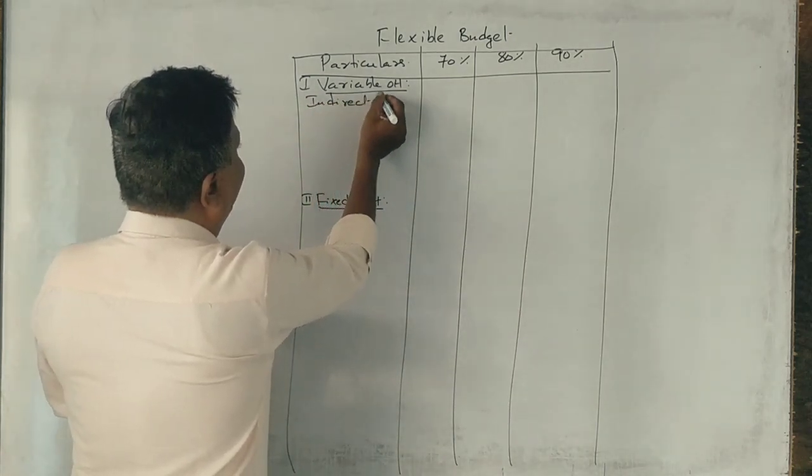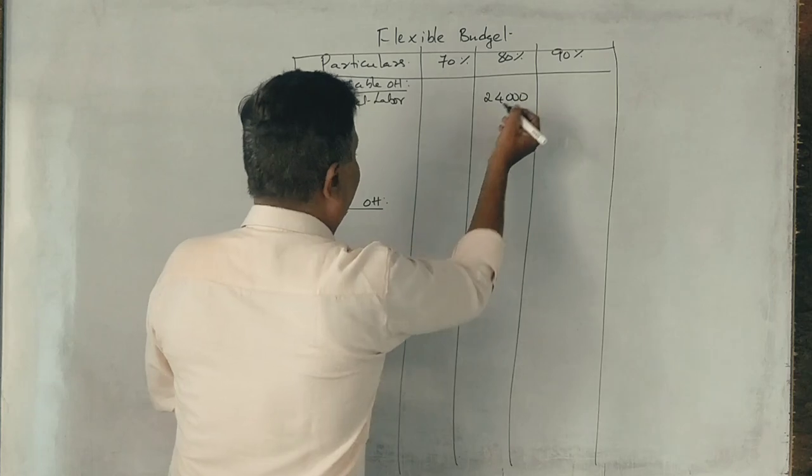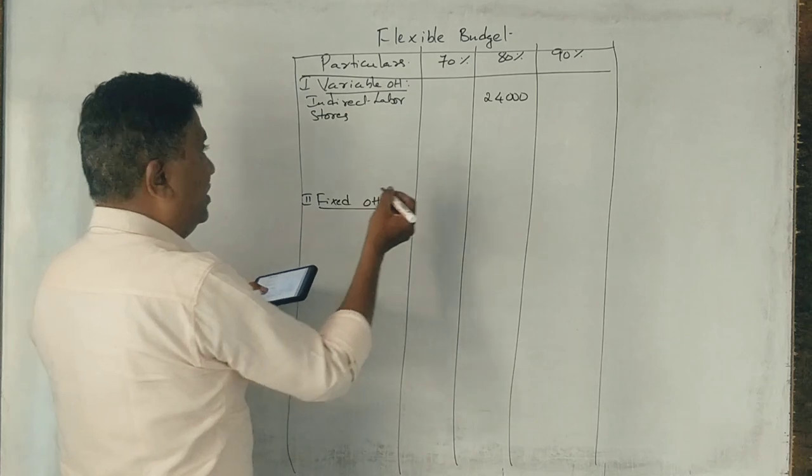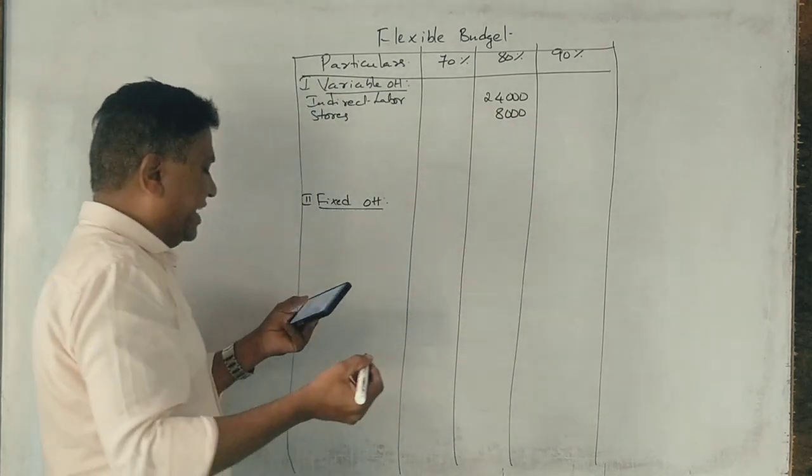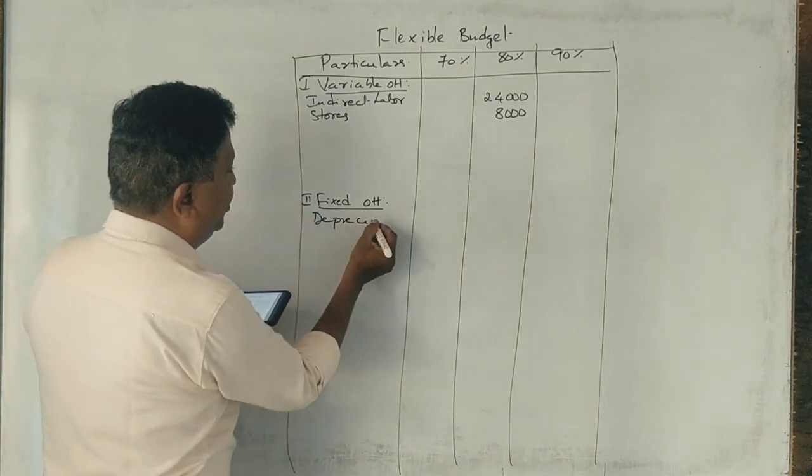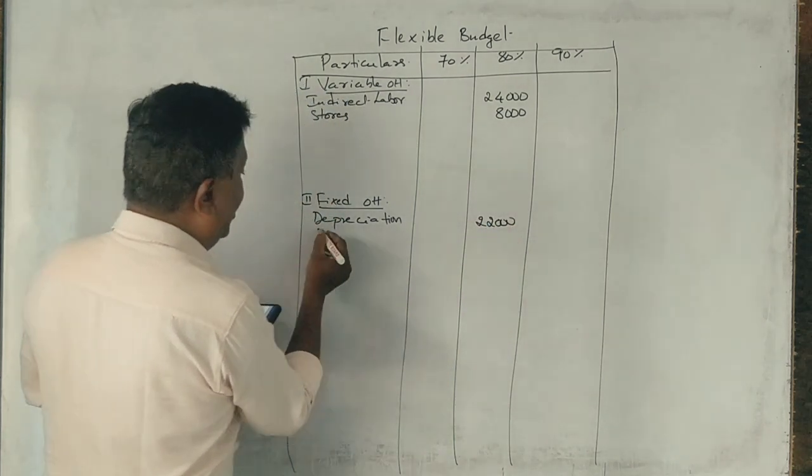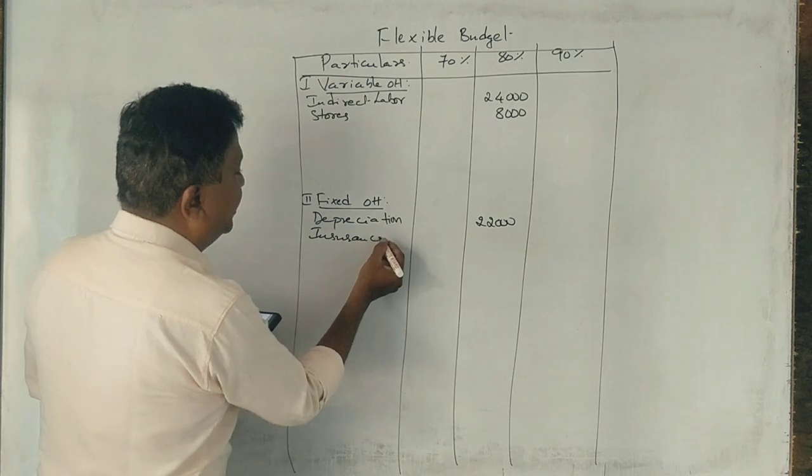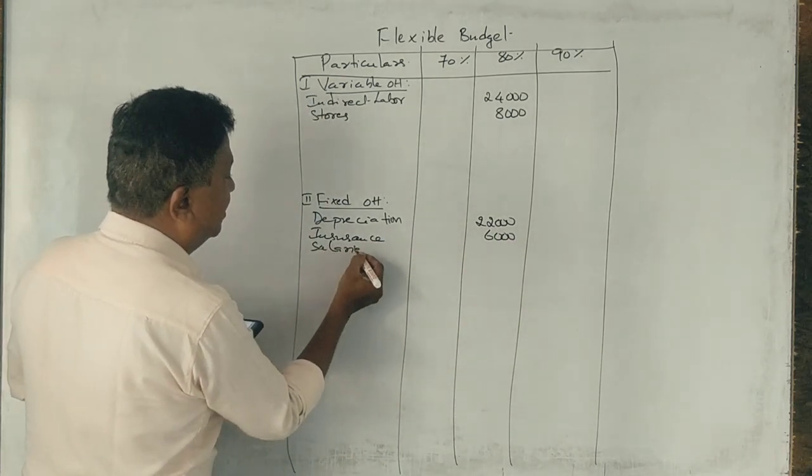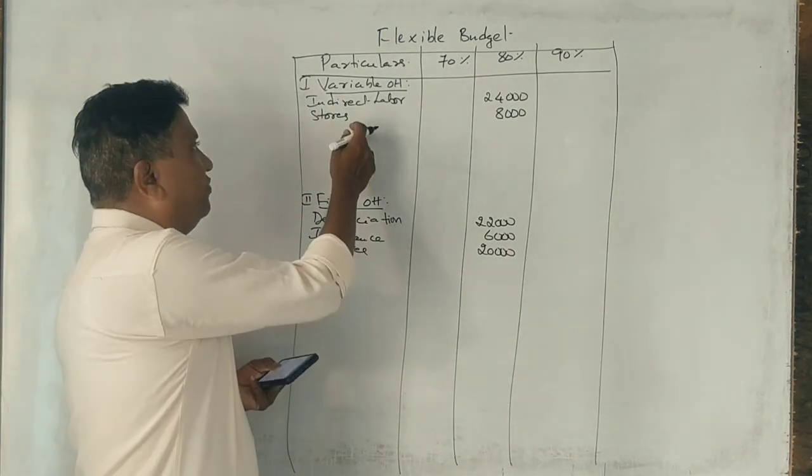First of all, variable overheads, fixed overhead. 80% of the market is 1,000. First of all, indirect labor. Indirect labor. Stores. 8,000. Fixed overhead. Semi-variable. Depreciation. Insurance 6,000. Salaries 20,000.